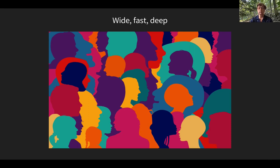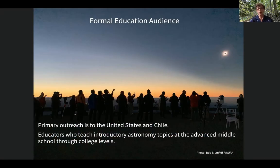Wide meaning that we would like to serve a diverse audience. Fast meaning that we'd like students and teachers to be able to access, use, and understand our data quickly without a lot of preparation. And finally, deep — that they leave with a deep understanding of what it is that they were trying to learn. Our audience is primarily the United States and Chile, and all of our activities will be available in Spanish and in English. We decided early on that we wanted to design for the most students, not just a few.